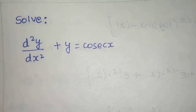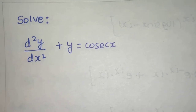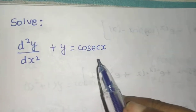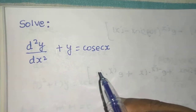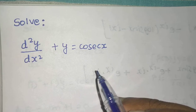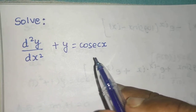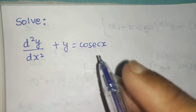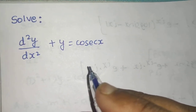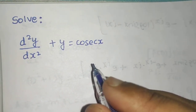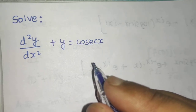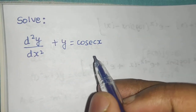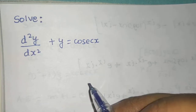Let's solve a question from linear differential equations with constant coefficients. The RHS is cosec x, which is a normal function of x — not in the form of exponential, cosine, or sine that we studied earlier. So we will have to use the general formula for finding the particular integral.